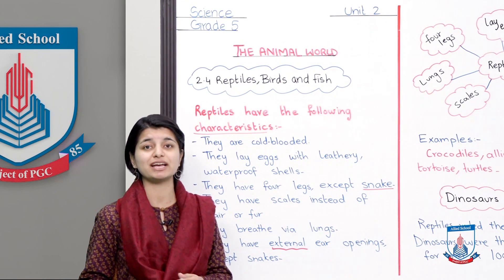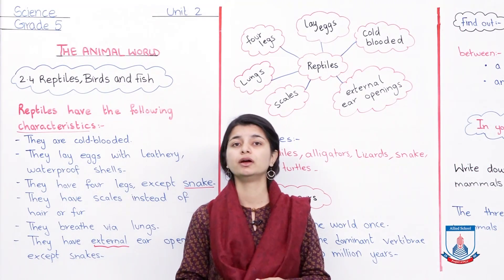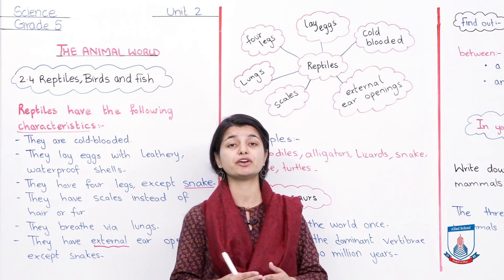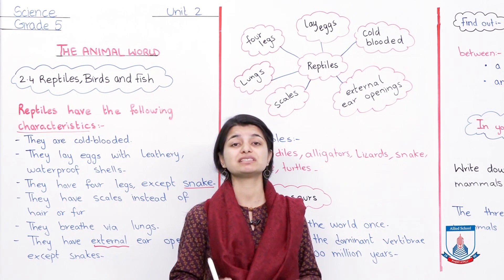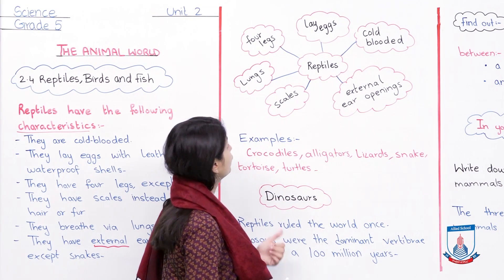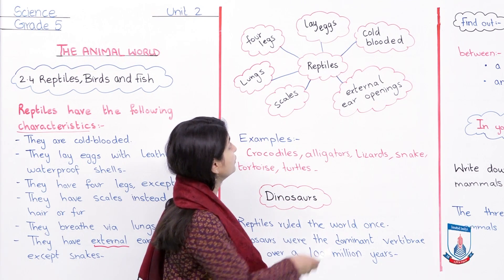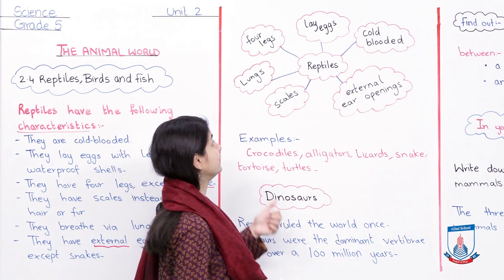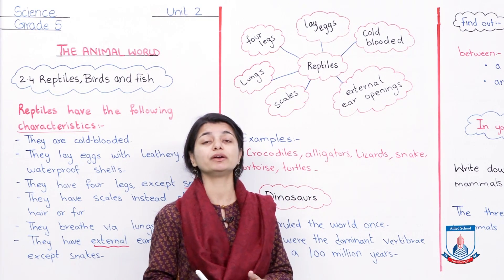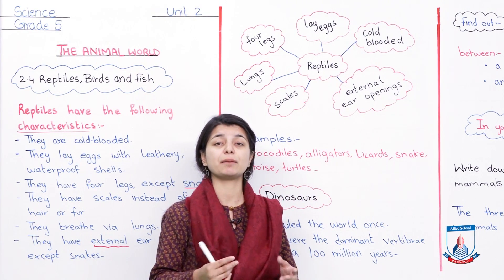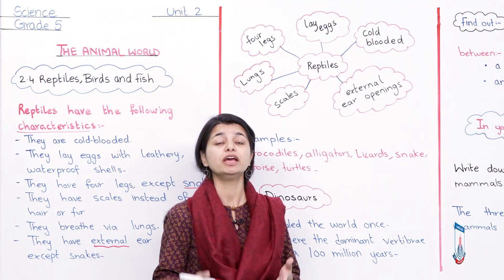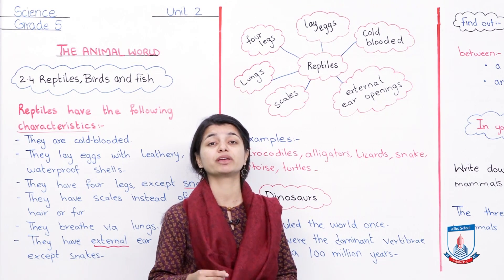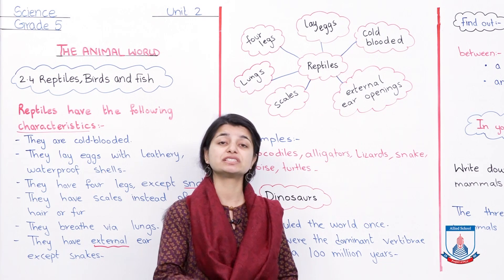Let's summarize what we just learned about reptiles in a web diagram. Reptiles have four limbs, they lay eggs, they are cold-blooded, they have external ear openings, they have scales on their body, and they breathe through lungs. These are all the important things you need to know about reptiles. Note them down and memorize them so you never forget the different characteristics of reptiles.